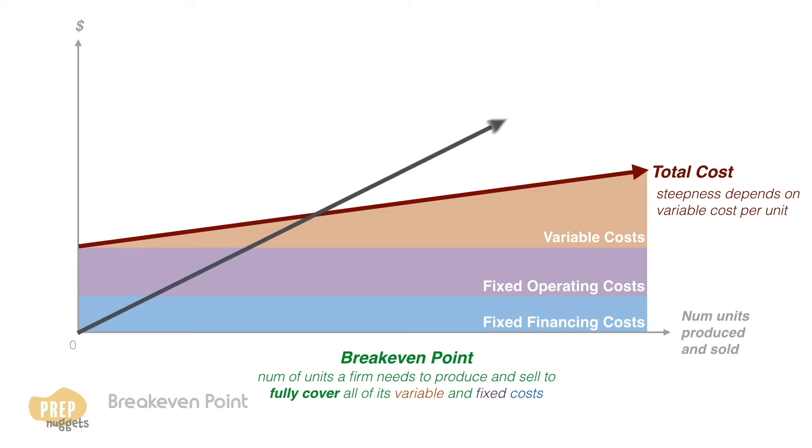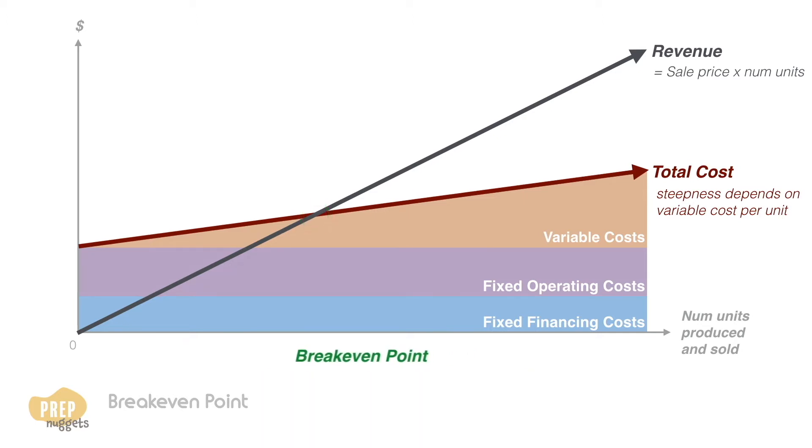So, if we plot the revenue against the number of units sold, the intersection between the two lines is the break-even point where revenue equals total cost.